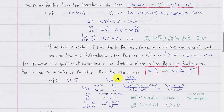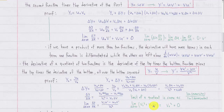Looking at the definition of a derivative, we find delta y by subtracting the two expressions. We combine the fractions, simplify the expression, and divide by delta x. As we take the limit as delta x approaches zero, the numerator turns into v times u prime minus u times v prime. At the bottom, the v0 squared term is a constant so it stays the same, while the delta v term approaches zero because as delta x approaches zero, delta v approaches zero — again because it's a continuous and differentiable function.